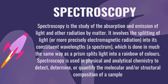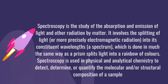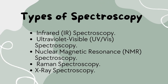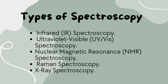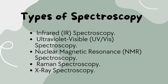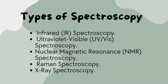Do you know what are the five basic types of spectroscopy? Let's understand. Number one is infrared (IR) spectroscopy. Number two is ultraviolet-visible (UV-Vis) spectroscopy. Number three is nuclear magnetic resonance (NMR) spectroscopy. Number four is Raman spectroscopy. Number five is X-ray spectroscopy.